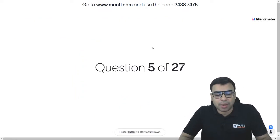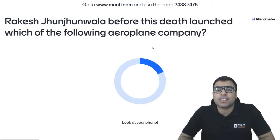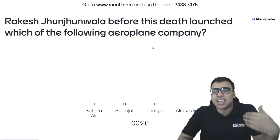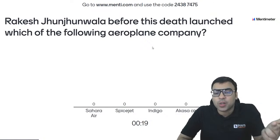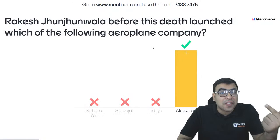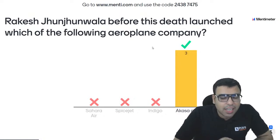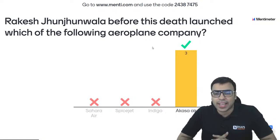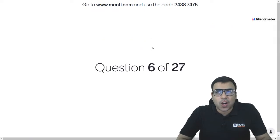Question number 5: Rakesh Jhunjhunwala, before his death, launched which of the following airline companies? About 15 to 20 days before his death, he was instrumental in launching it, and he even traveled on that first plane. Options: Sahara Air, Spice Jet, Indigo, Akasa Air. The right answer is D — Akasa Air. Before his death, Rakesh Jhunjhunwala launched an airline company called Akasa Air. Please press the like button — we are seeing only 4 likes.